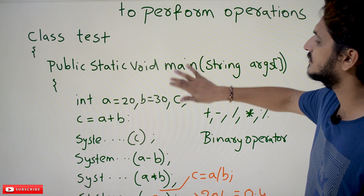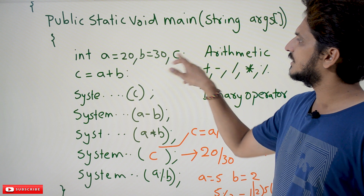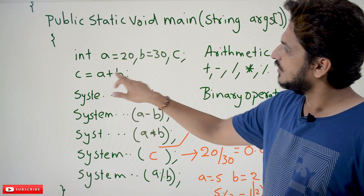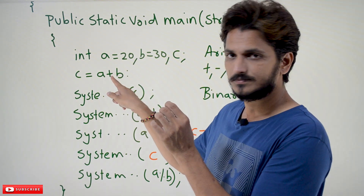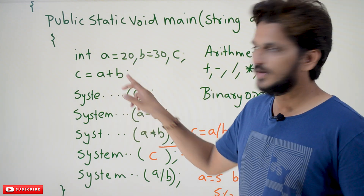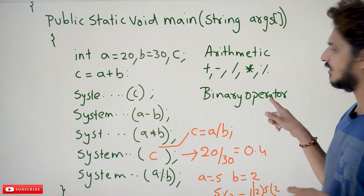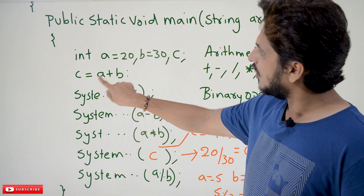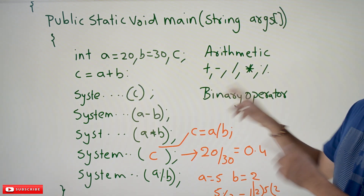Let's try to understand how to use these operators. We take int a equal to 20, b equal to 30, c. We are taking 3 variables named a, b, c. c is equal to a plus b. The symbol plus is applied between 2 operands — a and b — we call it as operands. If an operator is applied between 2 operands, we call it a binary operator.